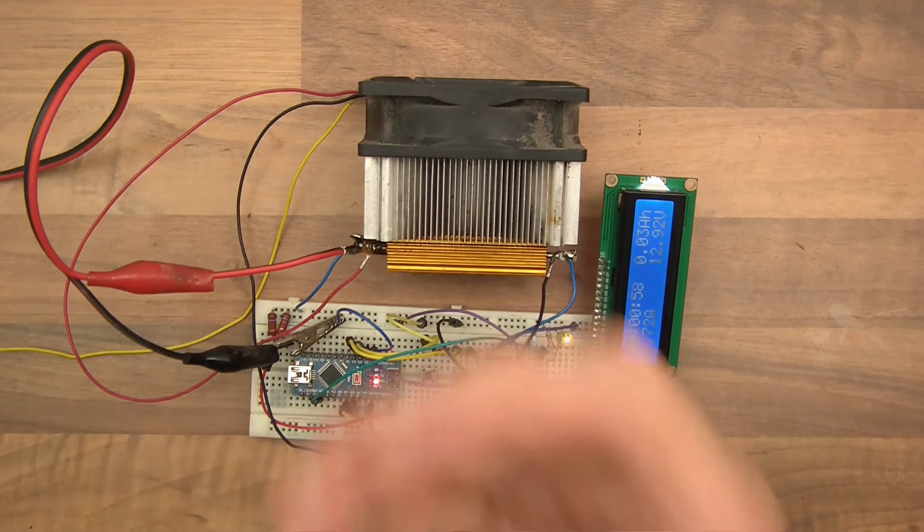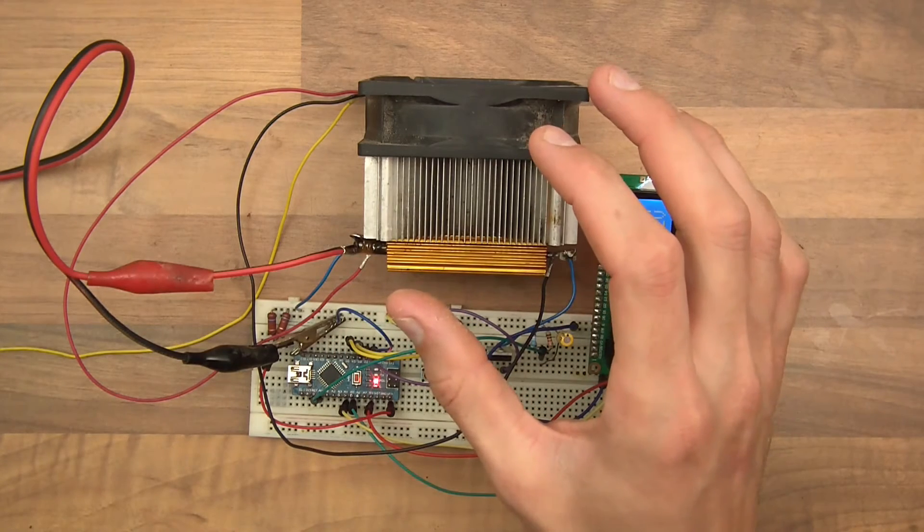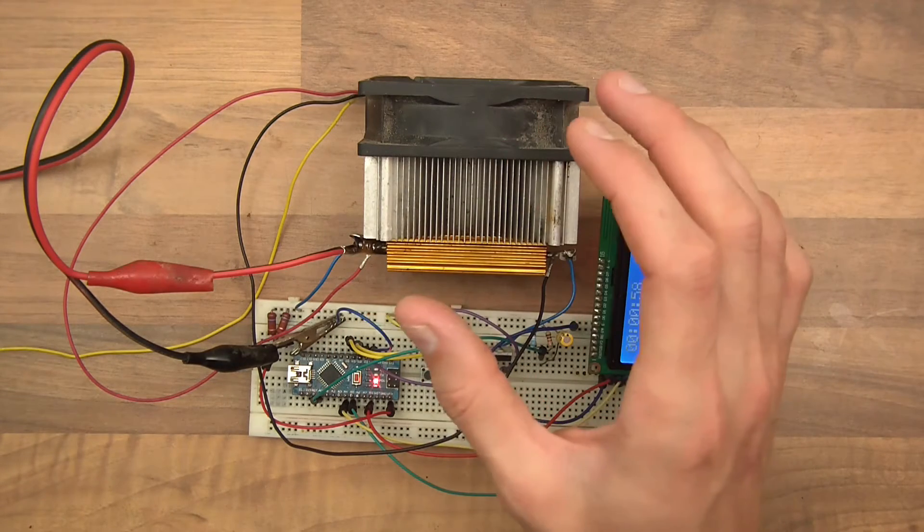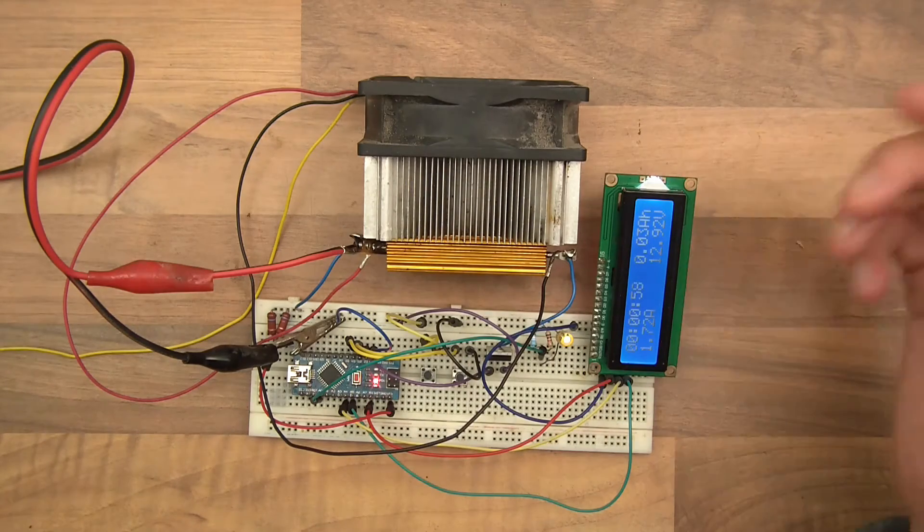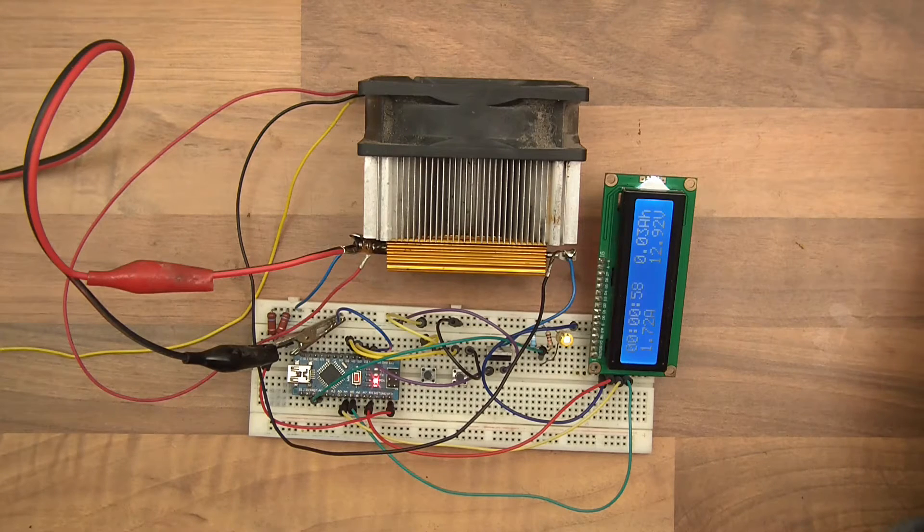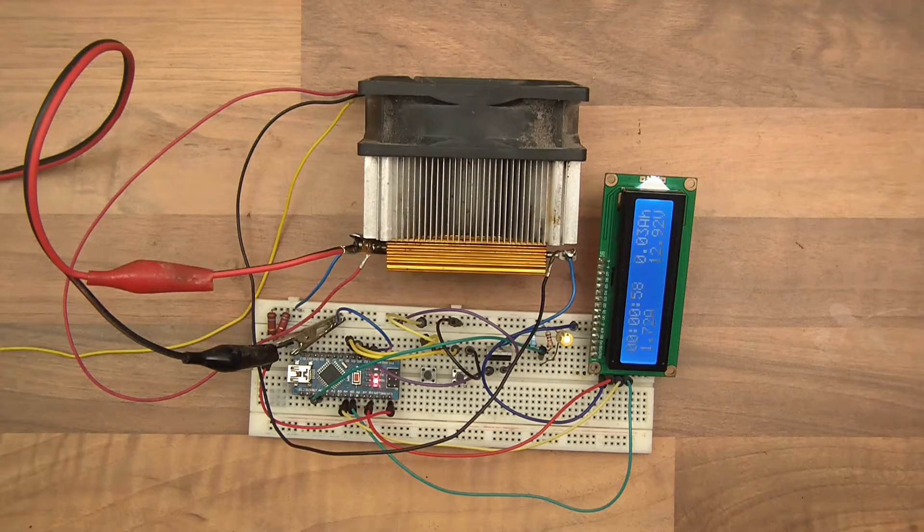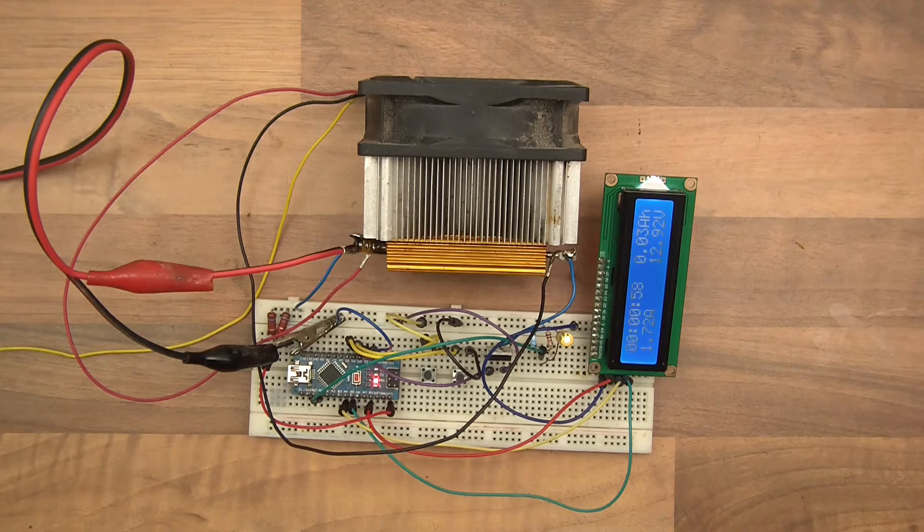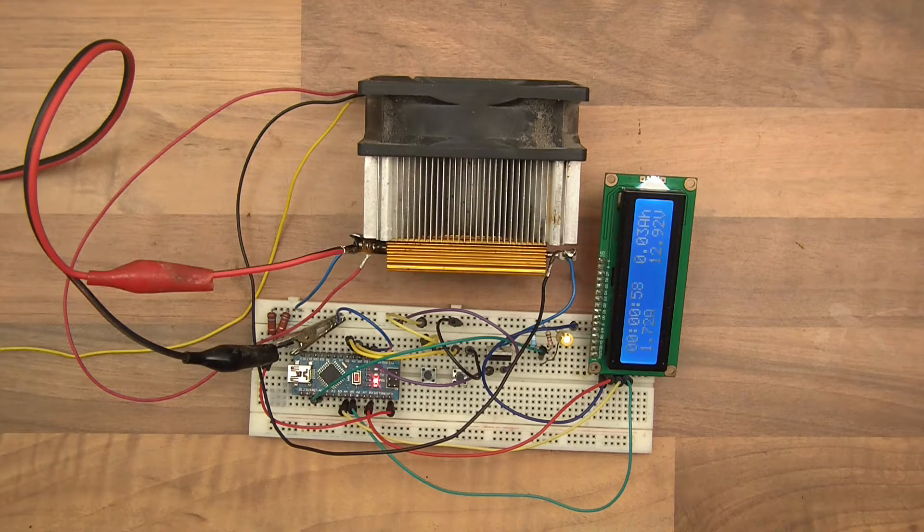The idea was that you'd get a lithium-ion cell, put it in this little project, and it would drain it and tell you the capacity. Pretty useful. But this video is slightly different to that. This one is going to be one or two videos instead of a series, and this is going to be slightly different. This is for lead acid.